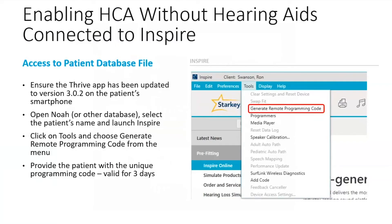Now the second way, if the client is remote, is you can generate a remote programming code and supply it to the patient remotely. To do this, you simply have to open up NOAA, select the patient, and open up the Starkey software. Hit Tools, then Generate Remote Programming Code, and a code will pop up on your screen in the same way. You can then write down this code, call your client and say it over the phone, email them, text them, or get the code to them by any other method.